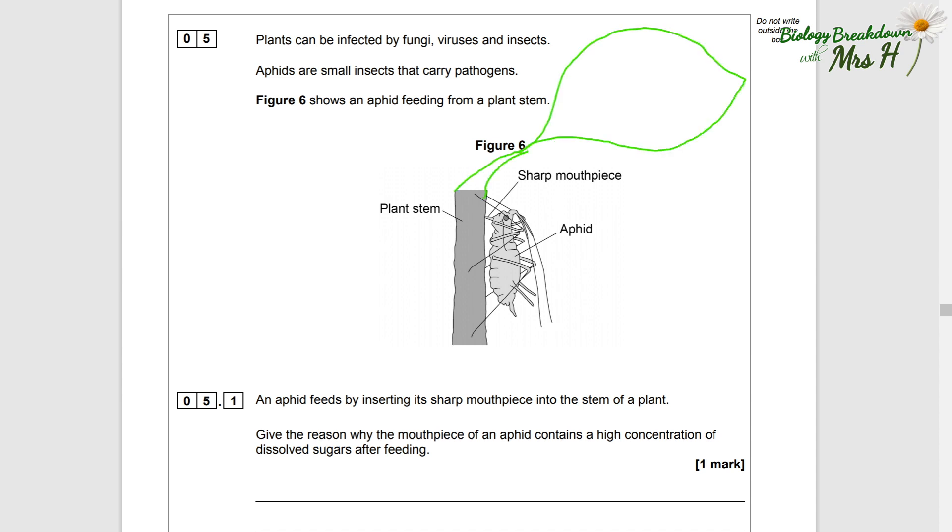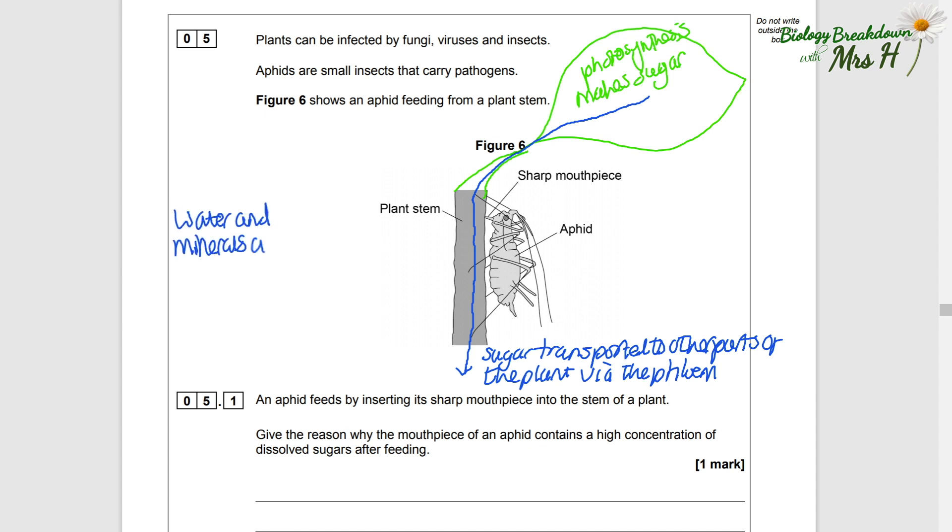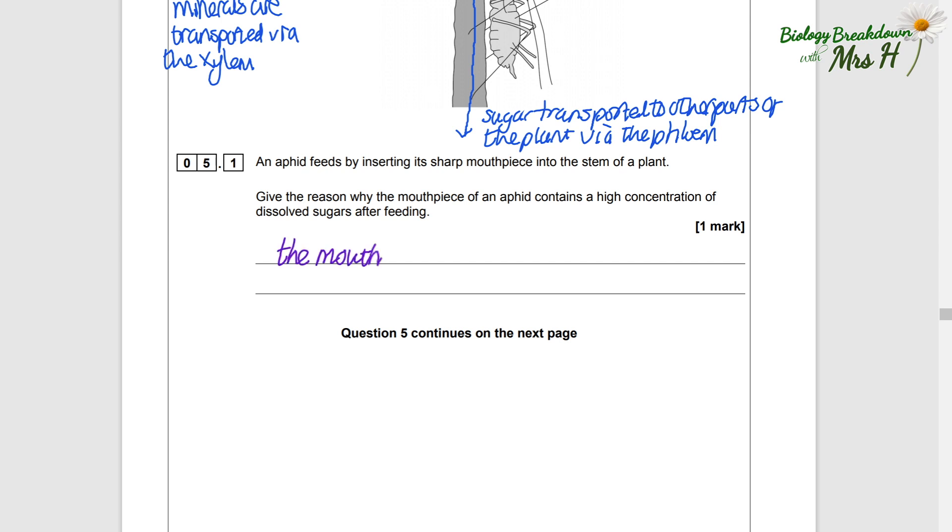Well, we need to remember that glucose is made in the leaves during photosynthesis and then transported to other parts of the plant if it's not used in respiration. That is transported to other parts of the plant by the phloem - not relevant but just while we're here, do you remember the xylem transports water and minerals? Anyway, if the aphid contains a high concentration of sugars after feeding, then its mouthpiece must have pierced the phloem, and that's what our answer is.